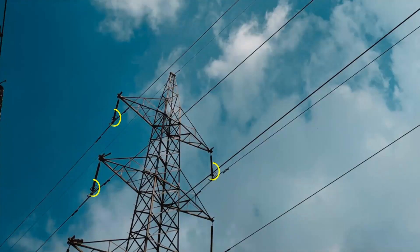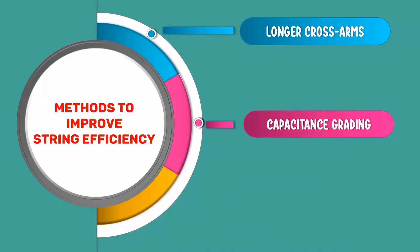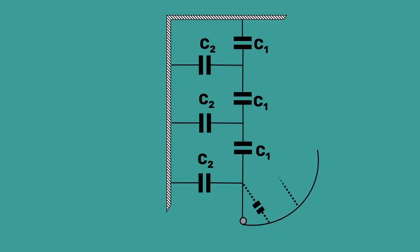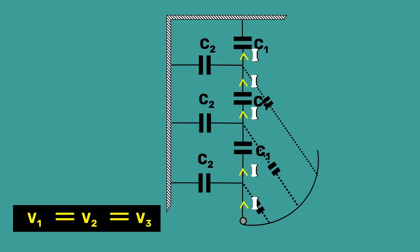Practically, how can we add current to enter the node? For that purpose, grading rings are used. Yes, the third method to improve string efficiency is by using grading rings. It introduces new capacitors into the circuit. This results in the flow of the same current I through each unit of the string. This leads to the uniform distribution of voltage across the discs of suspension insulator.